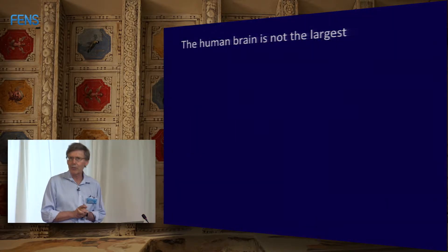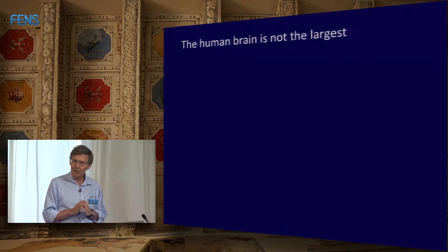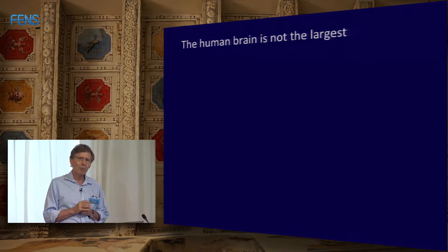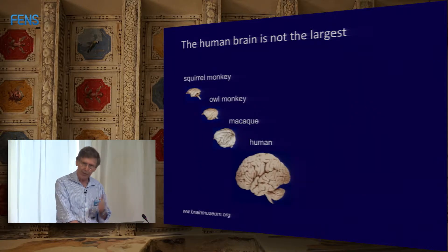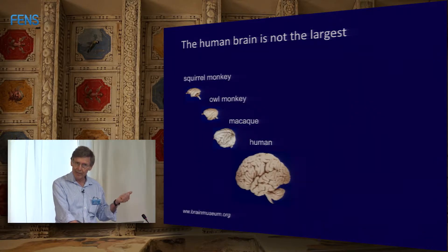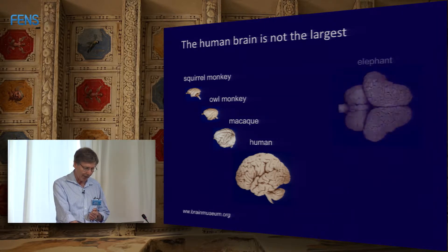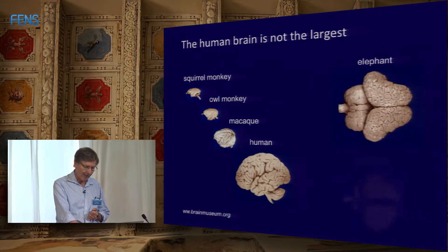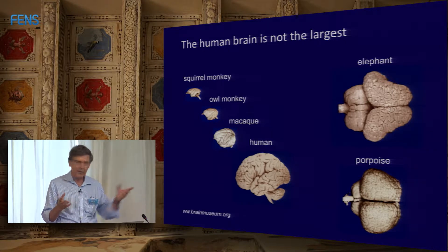Some of this is going to be a review that you probably all know, but I just want to make sure we're all on the same page. The human brain is not the largest mammalian brain — it is the largest primate brain, which are of course our closest living relatives. But elephants, whales, and porpoises have much larger brains.